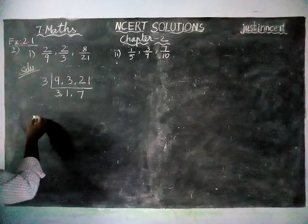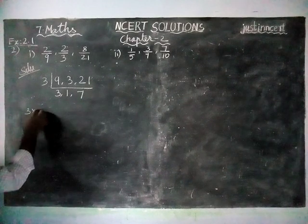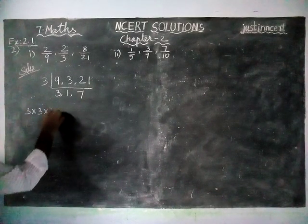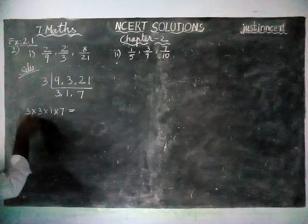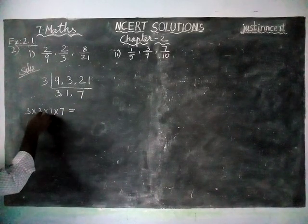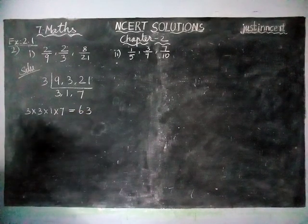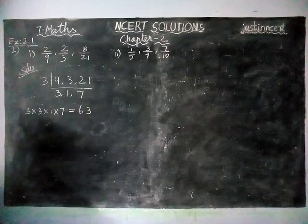Now we are going to find the LCM. 3 into 3 into 1 into 7 is equal to, 3 times 3 is 9, 9 times 7 is 63.